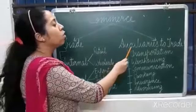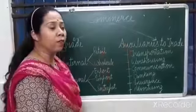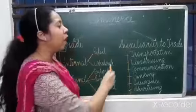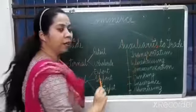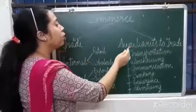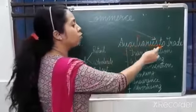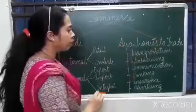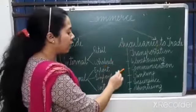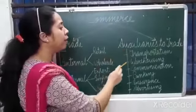Coming to the next part, that is auxiliaries to trade. All those activities which provide support to trade are termed as auxiliaries to trade, or we can say aids to trade. There are various activities which come under the category of auxiliaries to trade.